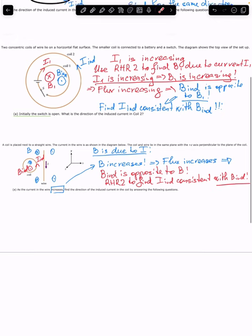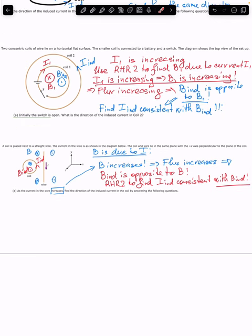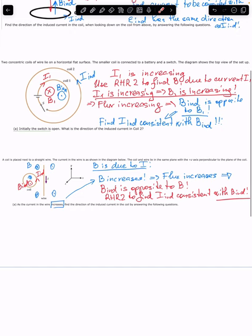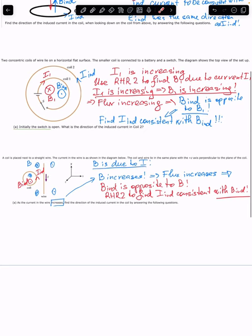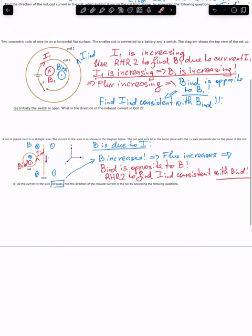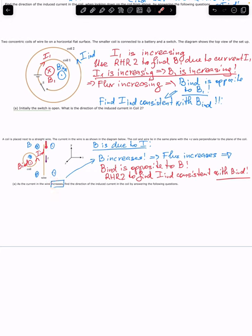Let's consider another problem. This problem had multiple questions; I'm just considering one of them, which should give a scheme of how to solve problems like this and provide a cross-check on your solution. In the next problem, we have a current in this direction in a straight wire, and a coil nearby, and the current increases in time.